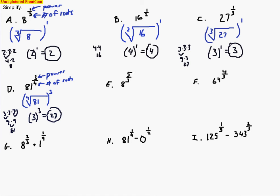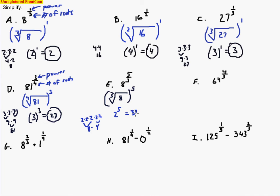Here's another one — same sort of thing, but with different number of roots and a different power. We need three numbers that multiply to make 8, then raise to the fifth power. We saw earlier that three numbers multiplying to make 8 gives us 2. So now we raise 2 to the fifth power. Three 2s make 8, and we have two more 2s — those make 4. So 8 times 4 gives us 32 as our answer.